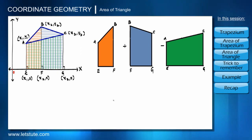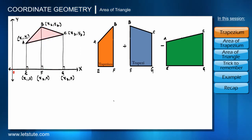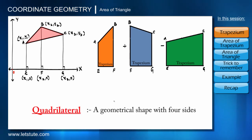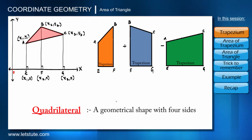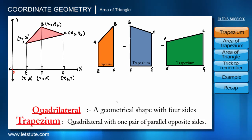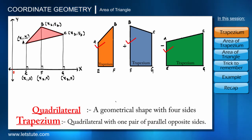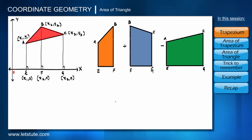If you notice, all three shapes are trapeziums. Trapeziums are quadrilaterals — shapes with four sides — where one pair of opposite sides are parallel. We can see that we have three trapeziums, and if we are able to find the area of these trapeziums, we would be able to find the area of the triangle very easily.